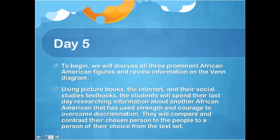Day five is the summing-up activity. We'll discuss all three prominent African American figures — Henry Brown, Sojourner Truth, and Ruby Bridges — and review the Venn diagram from the previous day. Using picture books, the internet, and their social studies textbooks, students will research the African American figure they chose on day four, create a poster displaying what they learned, and compare and contrast that person with one of the three characters from the texts read during the week. This is their final project for the text set.